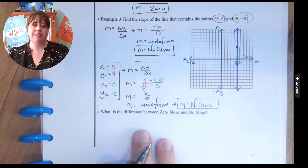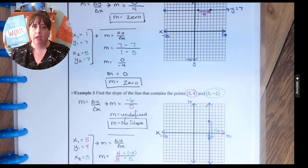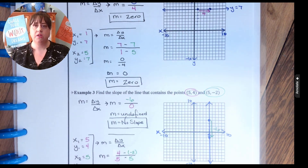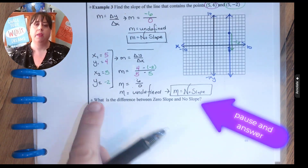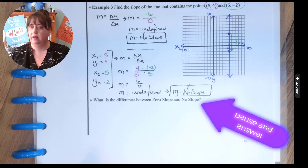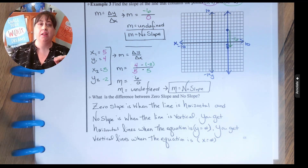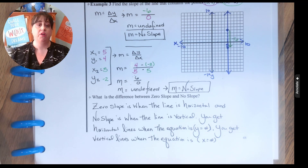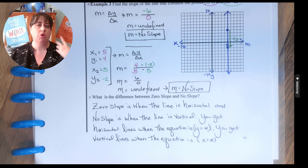So what is the difference between zero slope and no slope? Look at the directions your lines are going. In no slope, it is a vertical line. In zero slope, it is a horizontal line. Zero slope is when the line is horizontal and no slope is when the line is vertical. You get horizontal lines when the equation is y equals a number, and you get vertical lines when the equation is x equals a number — that was from what we learned in a previous lesson.